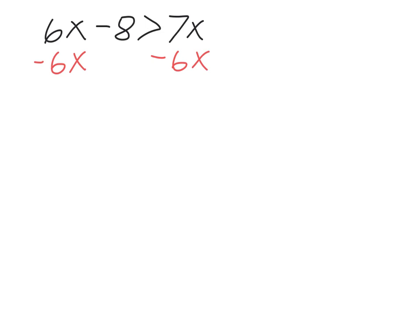And so the x's cancel to leave just negative 8 is greater than, and 7x minus 6x will give us just x. So this is saying negative 8 is greater than x.